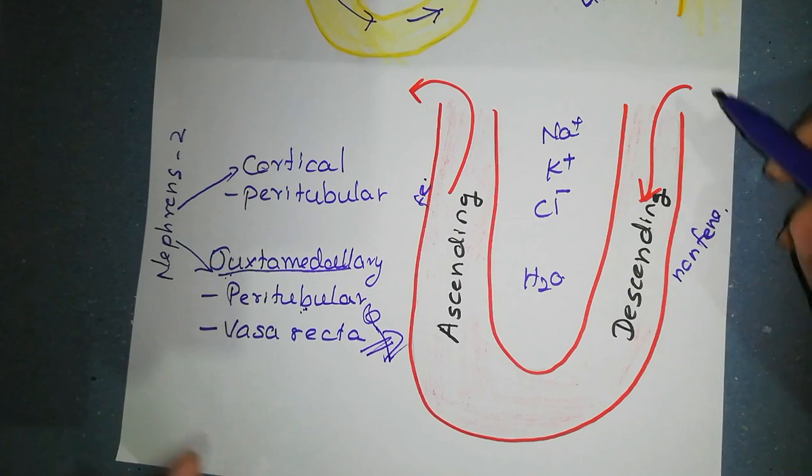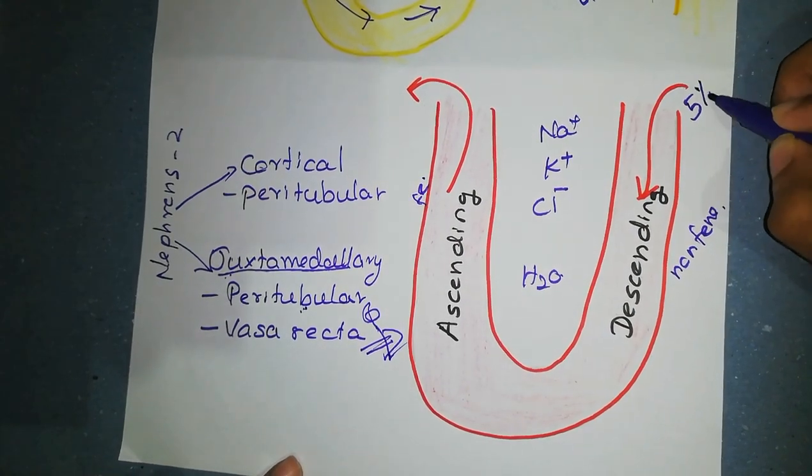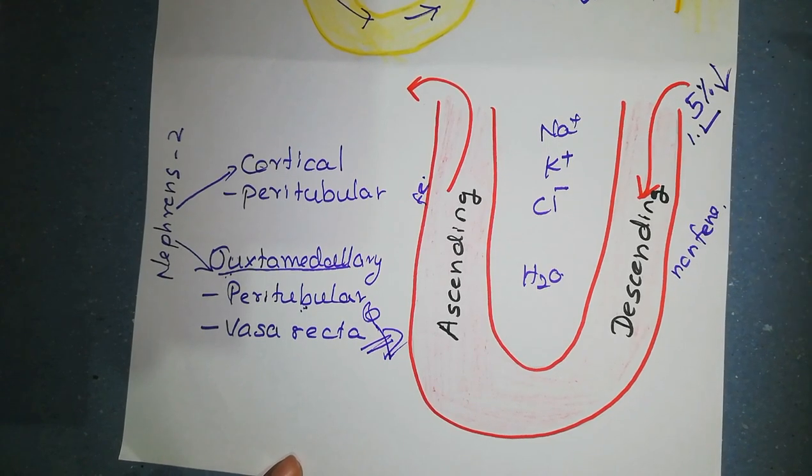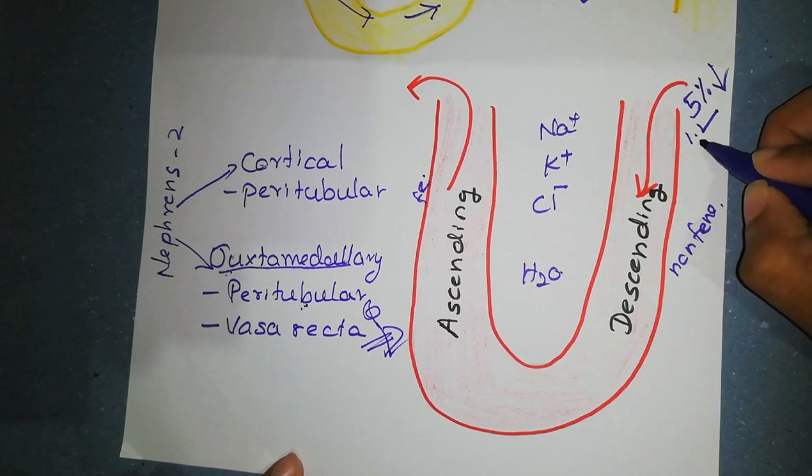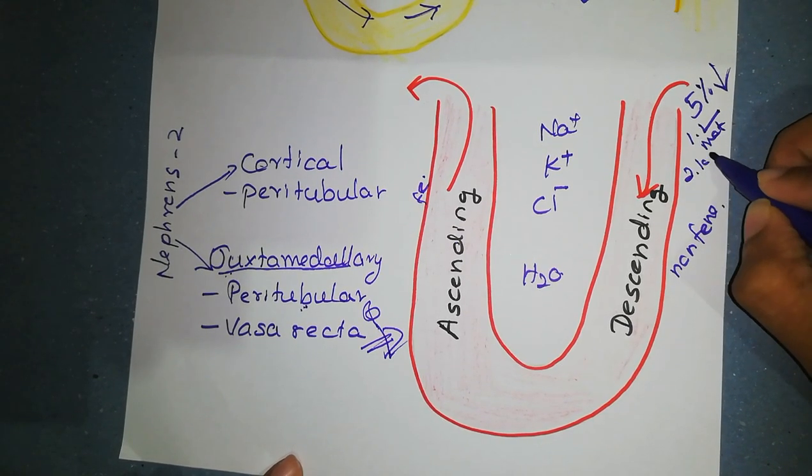Blood flow to the renal medullary from them is very low, less than 5% of renal blood flow, and it is sufficient to supply the metabolic needs of the cells in medullary. Low blood flow also helps to minimize solute loss from medullary interstitium.